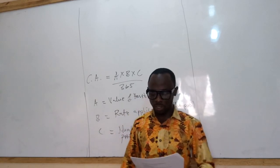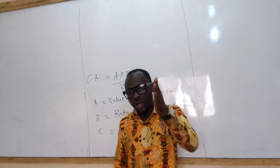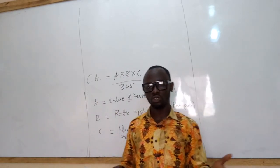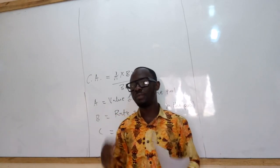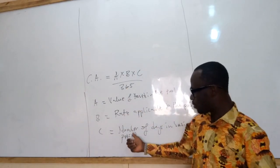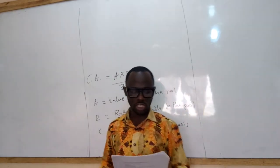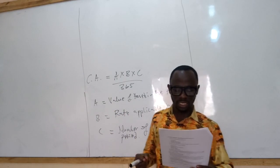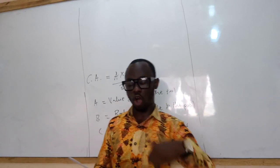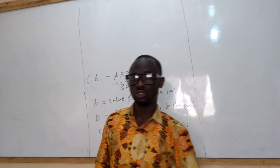Fifth: capital allowance computation is purely based on the basis period ending within a particular year of assessment. For example, if our year-end is 31st October and we acquire an asset in March, then our capital allowance calculation runs from 1st March to 31st October — that is the number of days in the basis period that the asset was acquired and used.